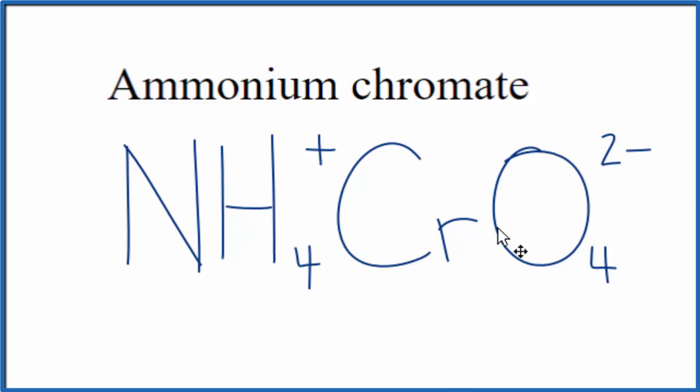We have our ammonium chromate here, and we have two ions - the ammonium ion and the chromate ion. Two ions coming together, that's an ionic compound. We need to make sure the charge balances. Right now, we have a 1+ for this ammonium ion.